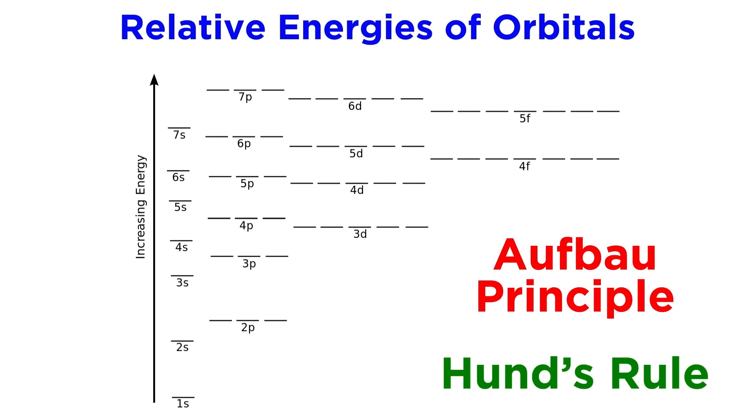An atom will fill up orbitals according to the Aufbau principle and Hund's rule until all of its electrons have a place to stay, and this will determine that atom's electron configuration.